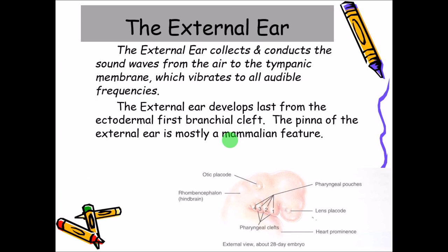The audible frequency, as you know, will be 20 to 20,000 hertz units. Those waves which we can hear will be transmitted through the external ear. Talking about the development in brief, the external ear developed from the ectodermal first branchial cleft.